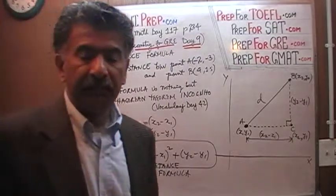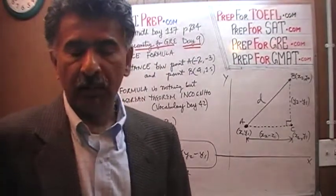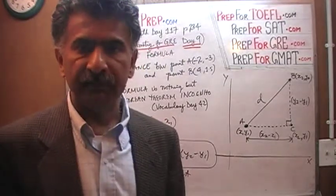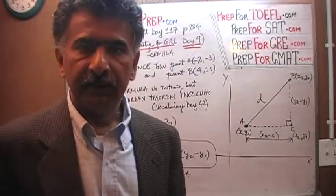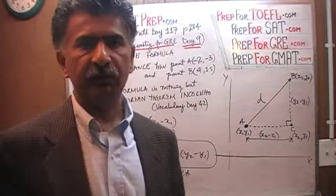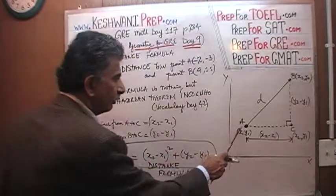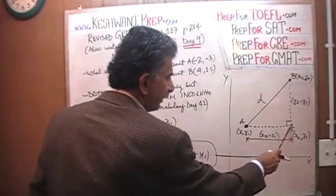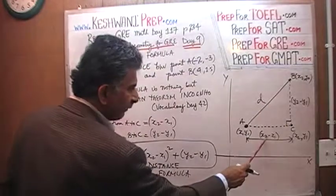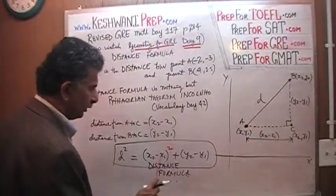As you can clearly see, the so-called distance formula is a simple application of the Pythagorean theorem. The Pythagorean theorem simply says that the square of the hypotenuse equals the sum of the squares of the other two sides. So the square of the hypotenuse — which faces 90 degrees — equals the sum of the squares of those two quantities.